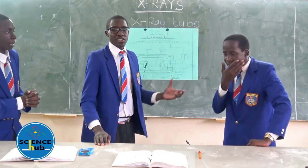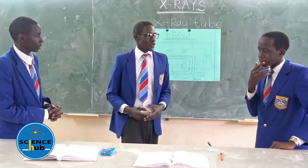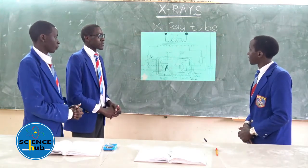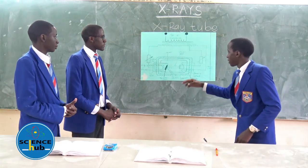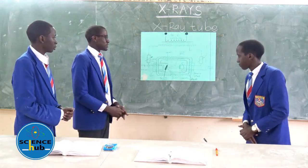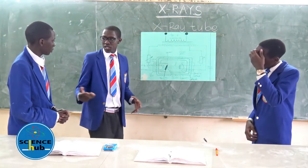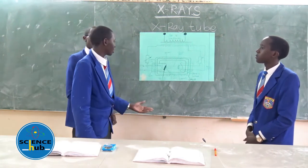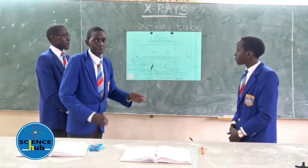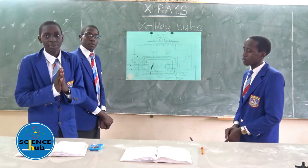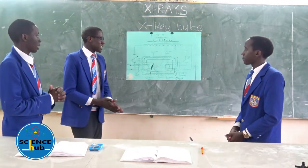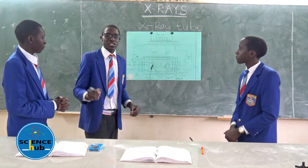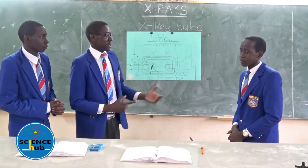Properties of X-rays: First, they cause photoelectric emissions. Second, X-rays travel in straight lines in a vacuum at the speed of light, which is 3.0 times 10 to the power of 8 meters per second. Third, X-rays are not deflected by magnetic or electric fields.